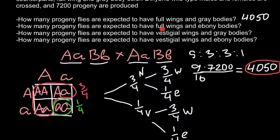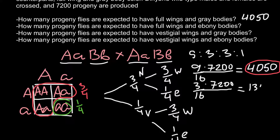The second question asks how many progeny flies are expected to have full wings and ebony bodies. We multiply three-quarters by one-quarter, giving three-sixteenths. We then multiply by the total number of progeny — 7200 — and the answer is 1350.